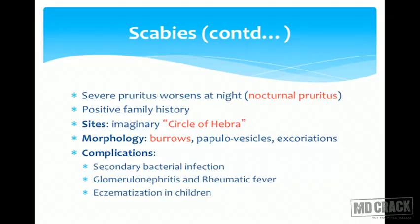Coming to the morphology, burrows are the classical lesions of scabies. However, because of severe pruritus, most patients when they present have already destroyed the burrows. So what we see is generally papulovesicular lesions and multiple excoriations at those sites. Complications of scabies include secondary bacterial infection with streptococci, which can result in glomerulonephritis and rheumatic fever, and eczematization is a very common problem in children.